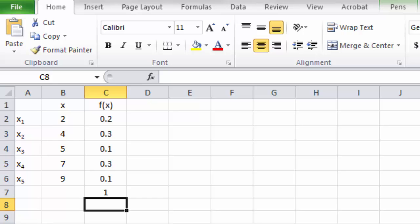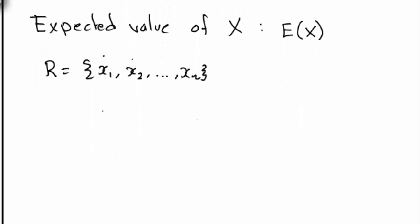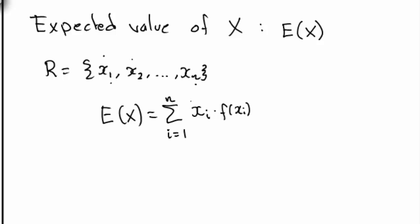For any other x we define f(x) to be 0. Here's the definition: the expected value of x, E(x), is defined as a sum where i goes from 1 to n. In the sum you multiply x_i with f(x_i) — that is, you multiply the actual value with the probability that x will take that value. That is the expected value defined for a discrete random variable x.